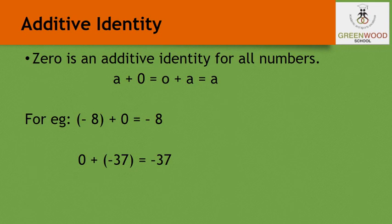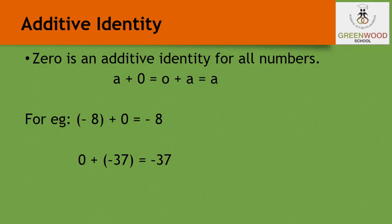Now let us learn about additive identity. Zero is an additive identity for all numbers. If you add any number with 0, the answer will be the number itself. For example, minus 8 plus 0 gives minus 8. Similarly, minus 37 plus 0 gives minus 37. So whenever we add any number with 0, we get that number itself.